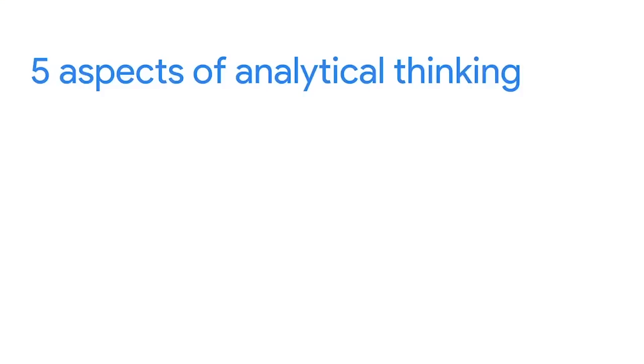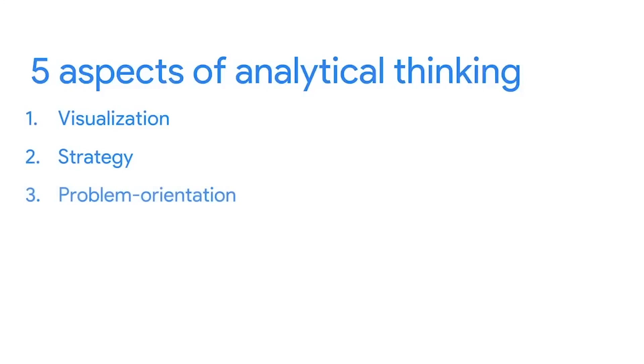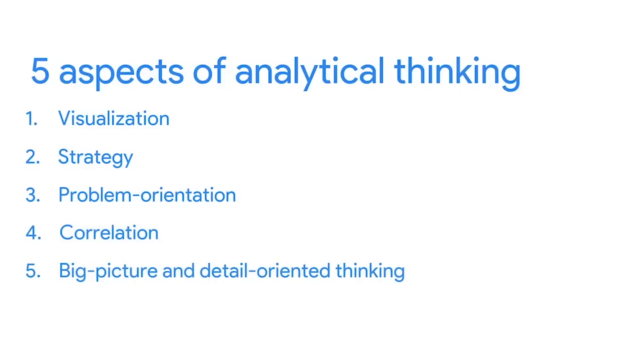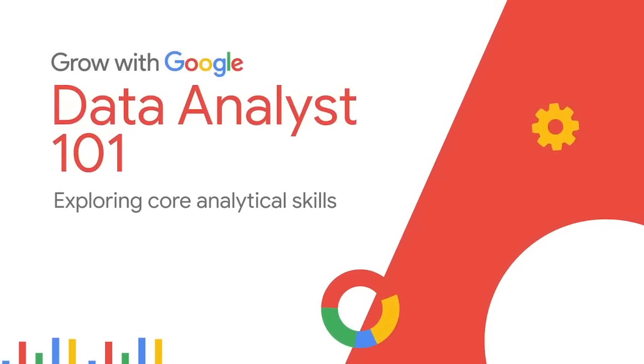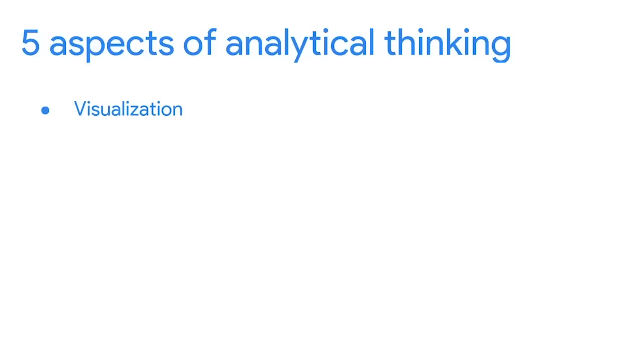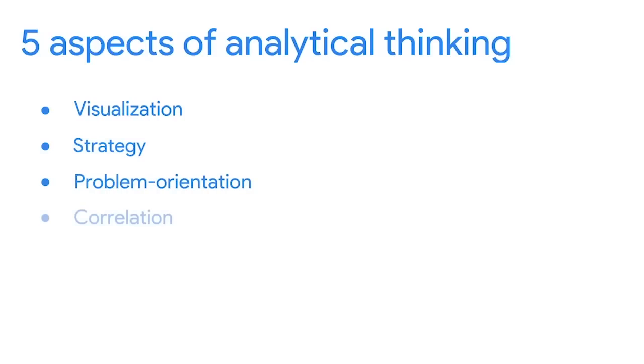Now that you know the five aspects of analytical thinking — visualization, strategy, problem orientation, correlation, and big picture and detail-oriented thinking — you can put them to work when working with data. Let's recap: the five key aspects are visualization, strategy, problem orientation, correlation, and big picture and detail-oriented thinking. We've seen how you already use them in your everyday life. We also talked about how different people naturally use certain types of thinking, but you can absolutely grow and develop the skills that might not come as easily to you. This means you can become a versatile thinker, which is a very important part of data analysis.